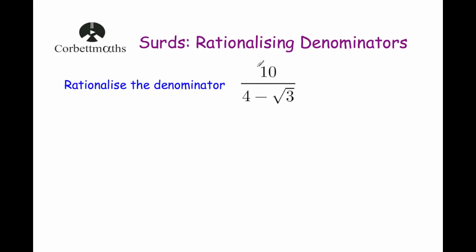So if you have something like 10 over 4 subtract root 3, what you're going to do is multiply both the numerator and the denominator by the conjugate of the denominator. The conjugate is the same expression but with the opposite sign. So instead of 4 subtract root 3, we're going to multiply by 4 plus root 3, and that will help get rid of the surd on the denominator. We multiply the top by that as well because you want it to be an equivalent fraction.